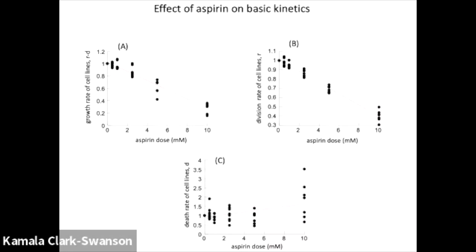We did the basic parameter estimates and found a quite clear picture. The growth rate of the cells — the exponential growth rate — slows down in a dose-dependent manner with aspirin. The division rate decreases with higher aspirin dose, and the more aspirin you give, the faster the cells die. So aspirin has quite a profound effect on the kinetics of cell growth, reducing the rate of cell proliferation and increasing the rate of cell death. That's a pretty straightforward result, but I think it has important consequences when we think about protection mediated by aspirin.